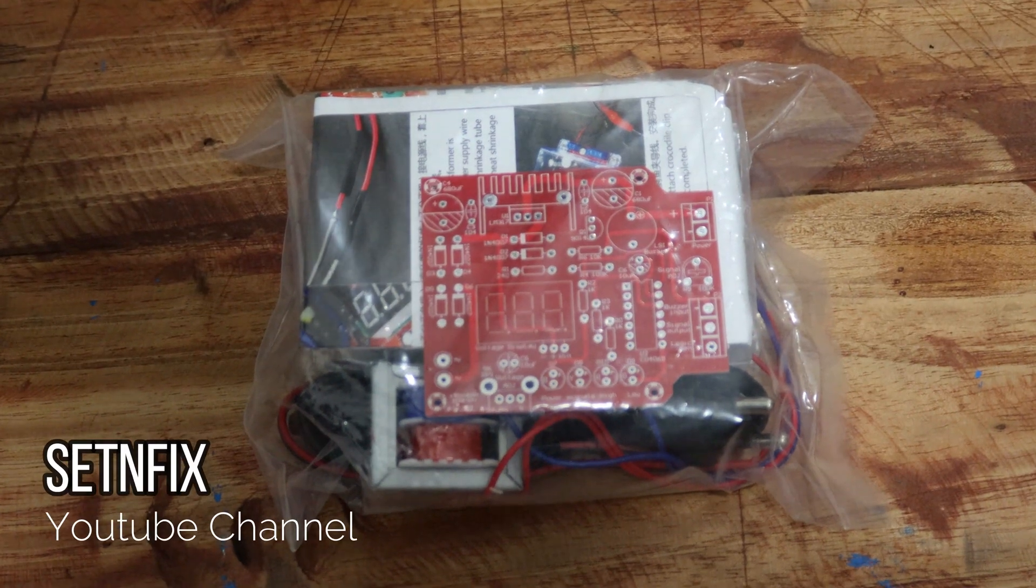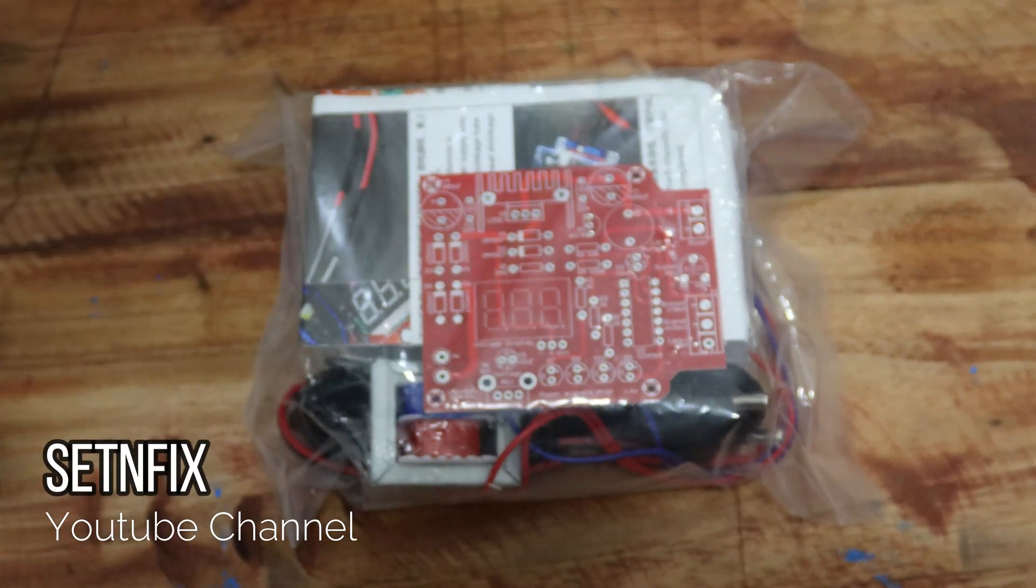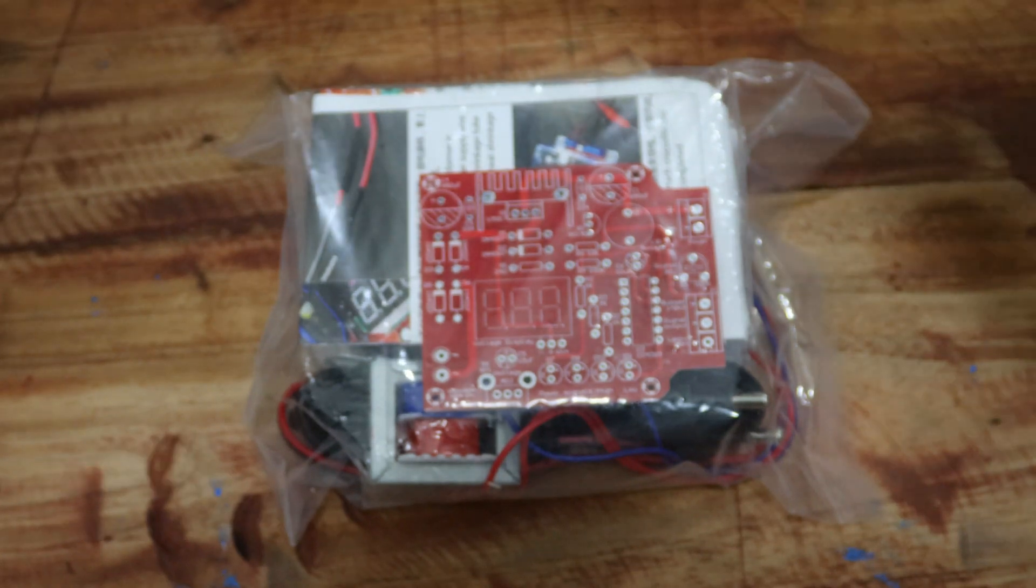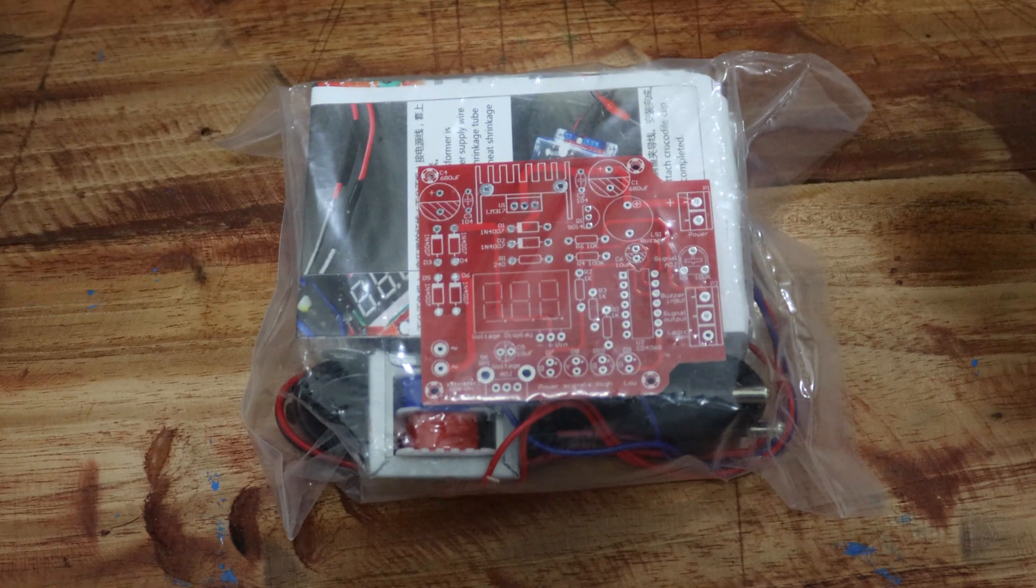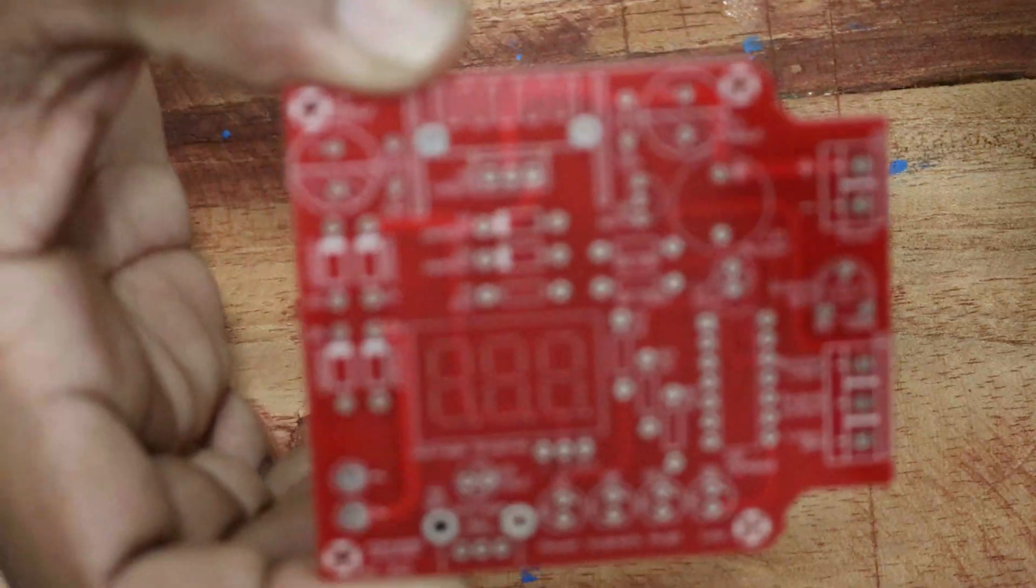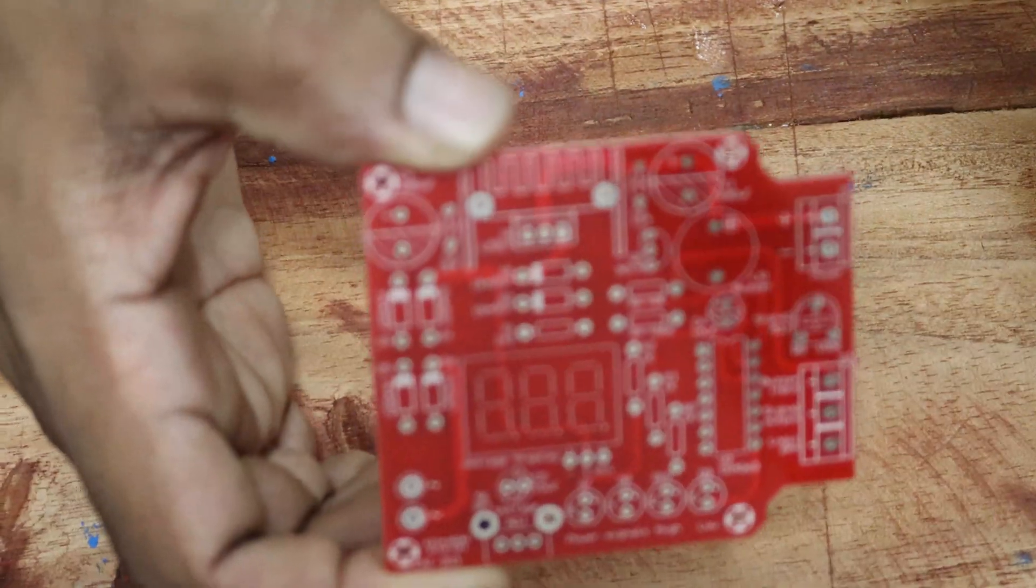This DIY circuit board is ordered from Aliexpress. Let's see what the insides are before starting the project. You can see high quality double layer PCB with red color solder mask.